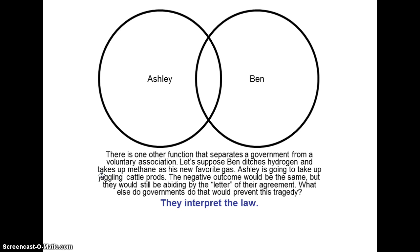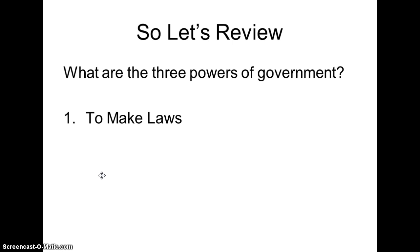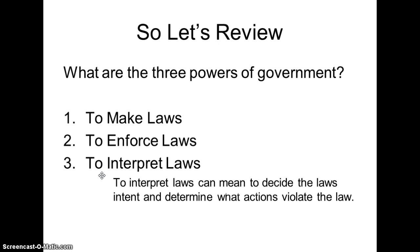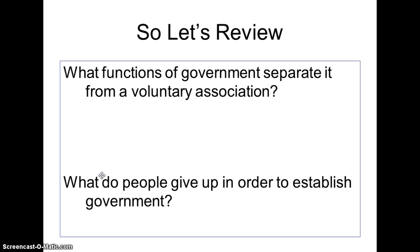So let's review. What are the three powers of government? The power to make laws, the power to enforce laws, and the power to interpret laws — which can mean deciding whether someone's intent violated the law and determining what actions in particular violate the law. What functions separate government from voluntary association? Governments also enforce laws and interpret laws.